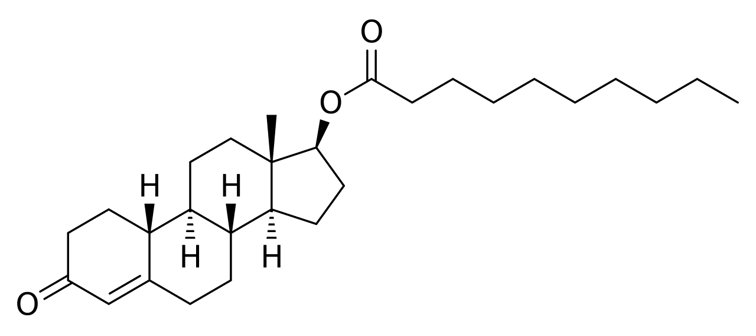History: Nandrolone decanoate was first described in the literature in 1960. It was developed by Organon and was introduced for medical use under the brand name Deca-Durabolin in 1962. Shortly thereafter it became one of the most widely used AAS in the world. Nandrolone decanoate was the second form of nandrolone to be introduced, having been preceded by nandrolone phenylpropionate in 1959.